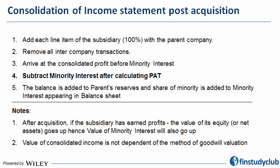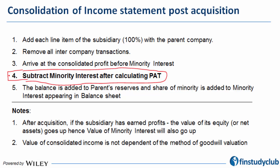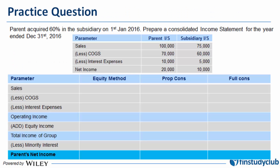Following our usual pedagogy, we are not going to go through each point on a line-by-line basis. We'll take up an example and revisit the points if needed. One thing to note: you need to subtract the minority interest after calculating PAT. We'll explain this at the right time. Here is a practice question — there is a standalone income statement for the parent and a standalone income statement for the subsidiary.